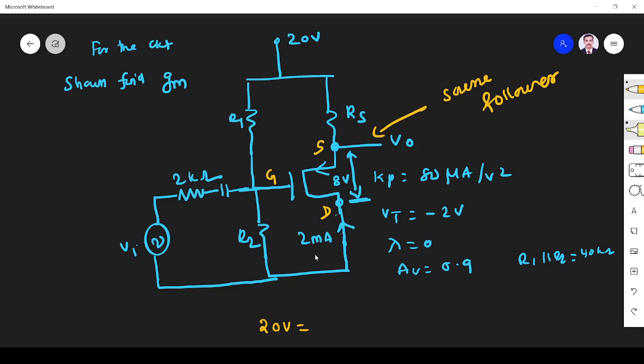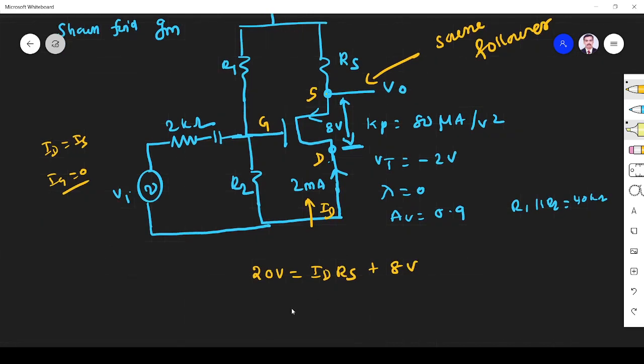Let us see. Here, what is this? The 20 volt is equal to - this is the total drop. What is this? This is source terminal, this is ID there. This is a drain current, the same current flows here. In MOSFET ID is equal to IS because IG is zero, so the same current will flow here.